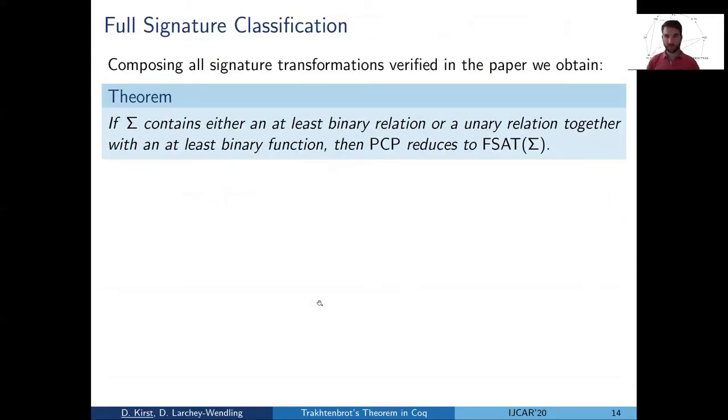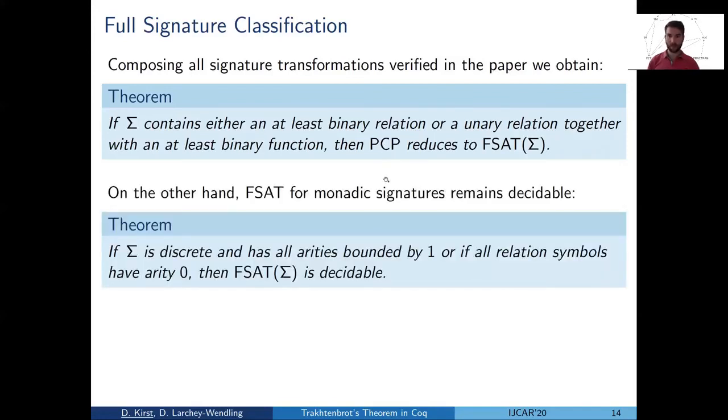And this brings me to the summary. In the paper, we give a full signature classification. What I have talked about in this talk was just the negative part, which we can conclude as, as soon as sigma contains anything binary, either a binary relation or a binary function plus a unary relation, then we have a reduction from PCP to F-SAT. So then undecidability is unavoidable.